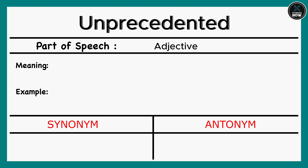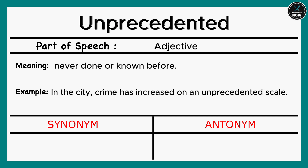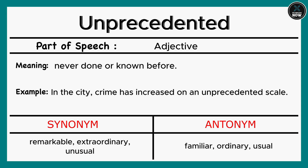Unprecedented: Never done or known before. Example: In the city, crime has increased on an unprecedented scale. Synonyms: Remarkable, Extraordinary, Unusual. Antonyms: Familiar, Ordinary, Usual.